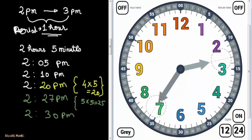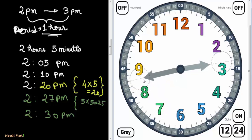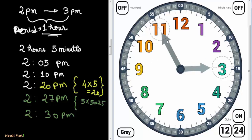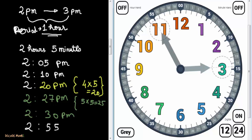Continuing: 2:35 p.m., 2:40 p.m. — tell me the time — it's 2:43, 2:45. The hour hand is just nearing 3, but it's not exactly 3. Then 2:47, 2:48, 2:49, 2:50, 2:55. That is 11 times 5, which equals 55. So the time is exactly 2:55 p.m.